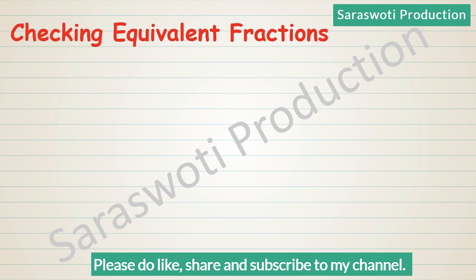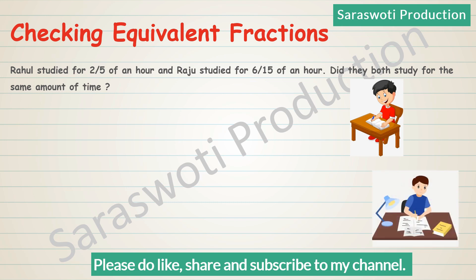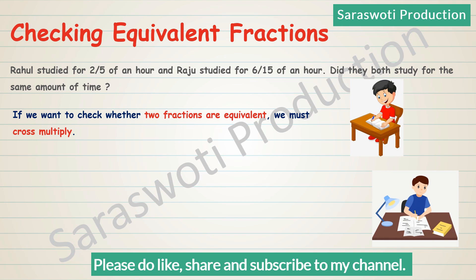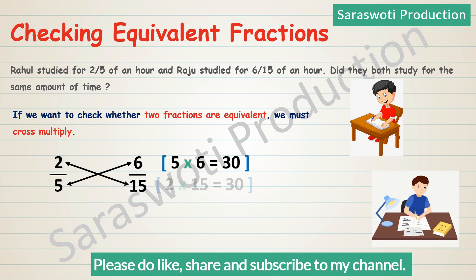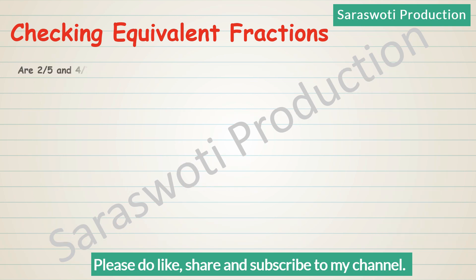Checking equivalent fractions. Rahul studied for 2/5 of an hour and Raju studied for 6/15 of an hour. Did they both study for the same amount of time? To check whether two fractions are equivalent, we must cross multiply. For 2/5 and 6/15: 5×6 equals 30, and 2×15 equals 30. Since the cross products are equal, the fractions are equivalent. Answer: Rahul and Raju both studied for the same amount of time.